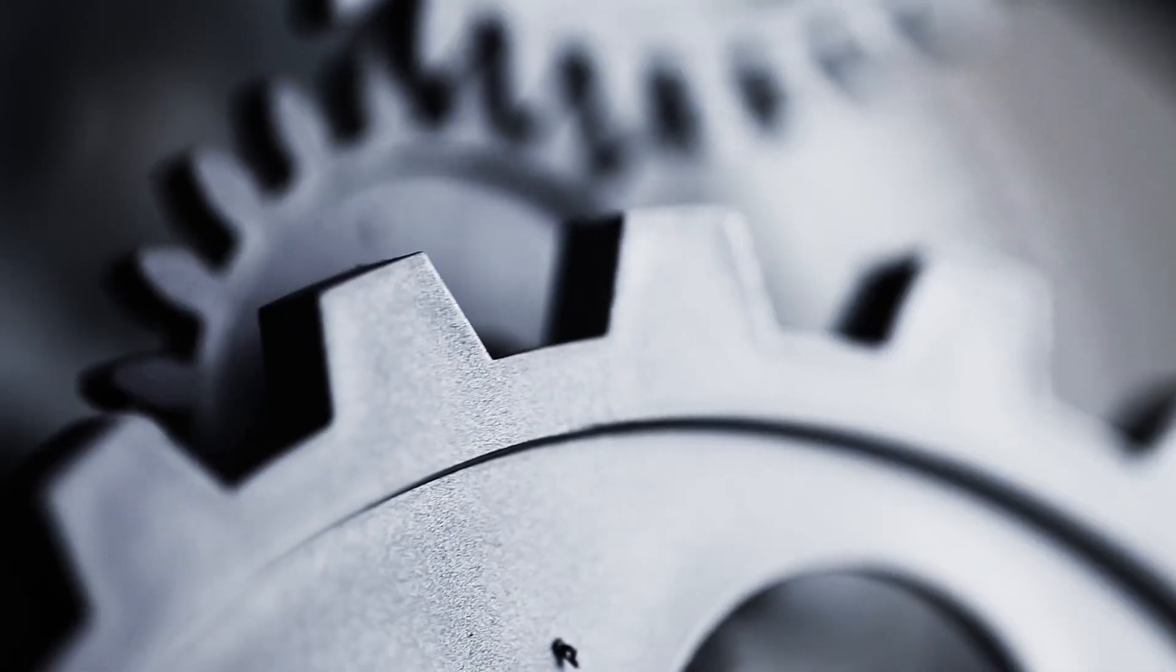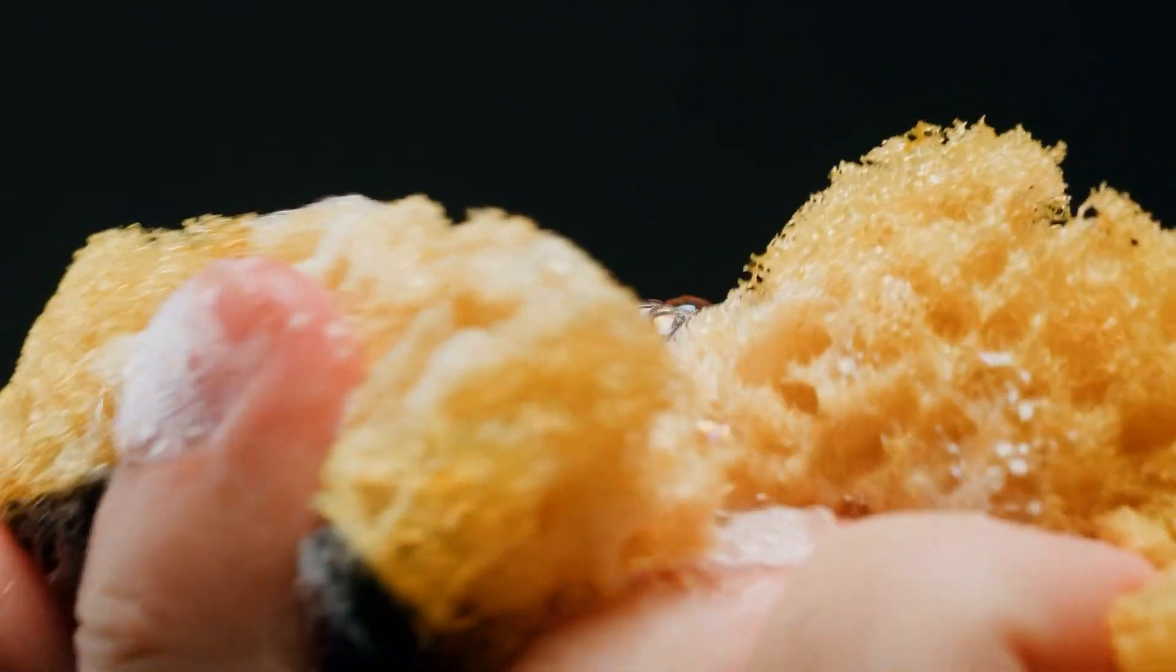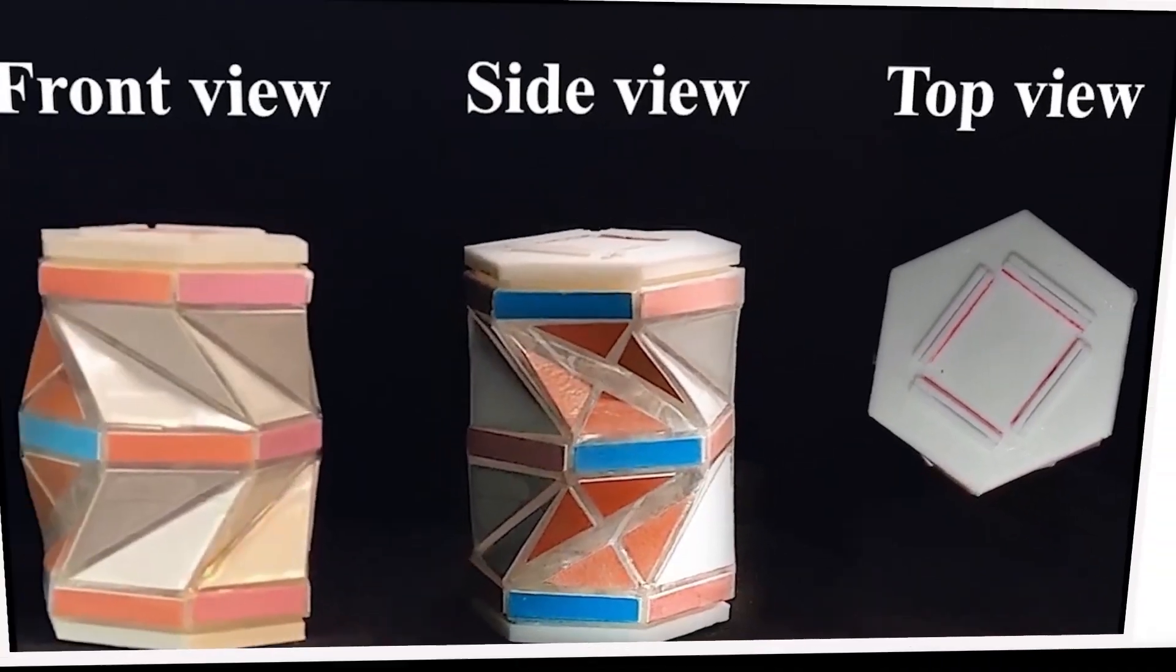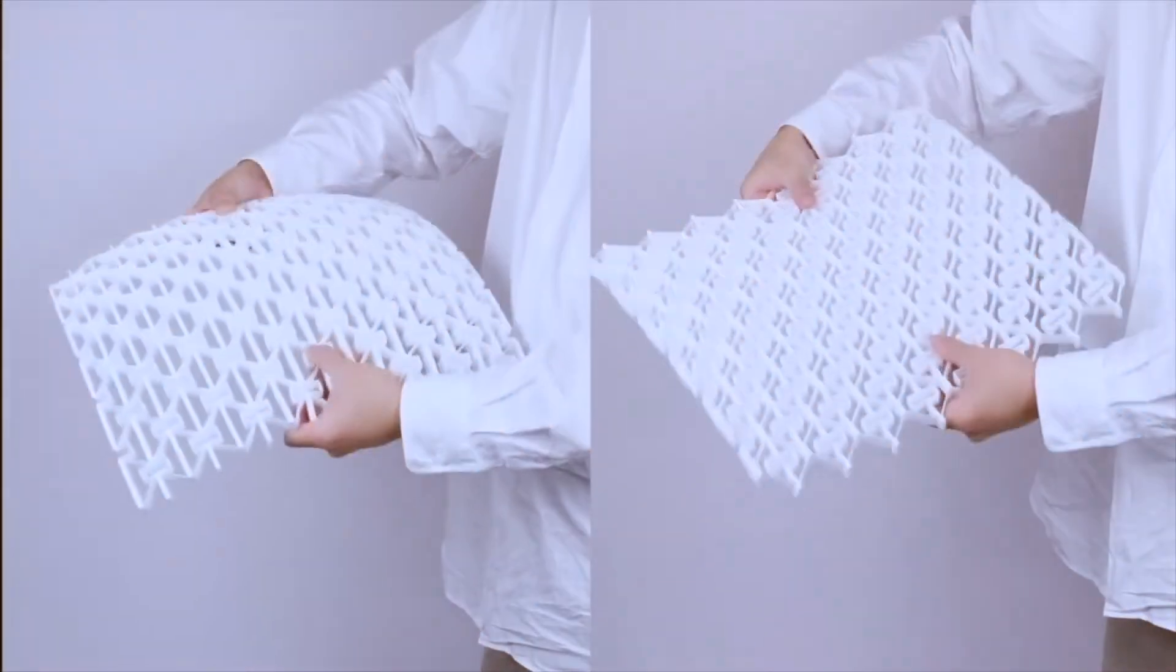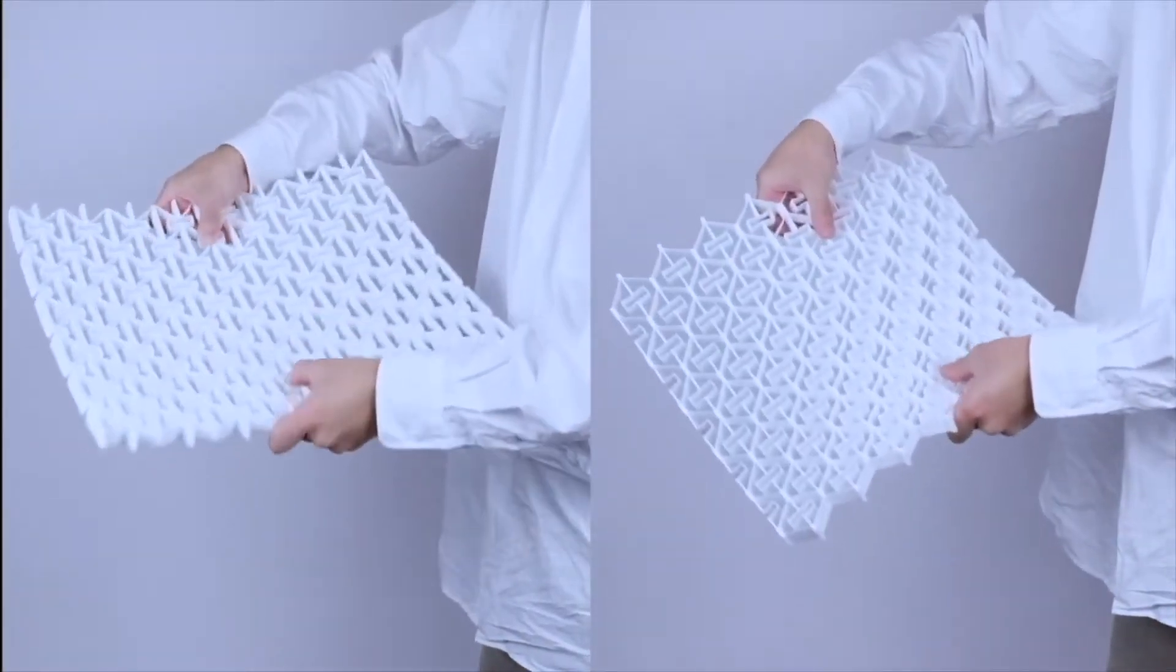Imagine a piece of plastic that behaves like metal, or a soft sponge that can stiffen or twist when triggered. That's the idea behind metamaterials. They are engineered at the structural level to act in surprising ways.